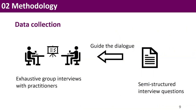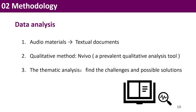The data were collected through two rounds of exhaustive group interviews with practitioners who participated in the food supply chain project. We designed a set of semi-structured interview questions to guide the dialogue between the researchers and the interviewees. The two-round group interviews lasted about three hours, and audio materials were then transcribed to text documents. We analyzed these documents through widely used qualitative methods, and also used NVivo, a tool for qualitative analysis. The systematic analysis was used to manually find out the challenges and possible solutions, and the processes were carried out independently with double-checked results.